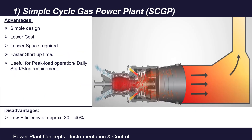The simple cycle gas power plant is very simple in design and has a lower cost compared to closed cycle and combined cycle power plants. As the number of components is very less, it requires very less space. The main advantage is its faster startup time to reach full capacity. Due to this faster startup time, it is very useful to cater to peak load requirements, generally in power plants where daily start and stop is required.